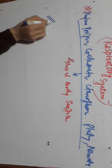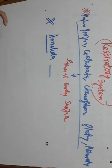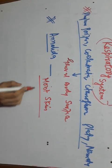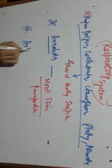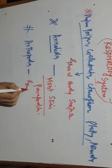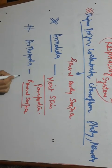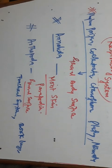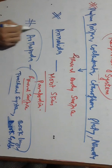In case of Annelida, the process of respiration occurs by the help of moist skin. In case of Arthropoda, respiration takes place by the help of a tracheal system. In Arthropoda we also find book lungs and book gills as respiratory organs.